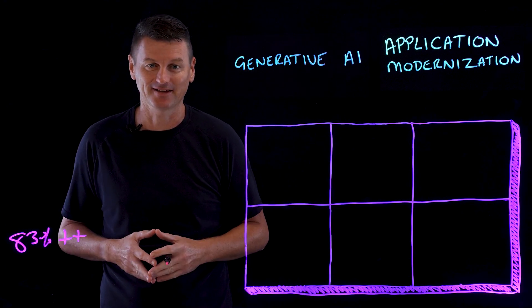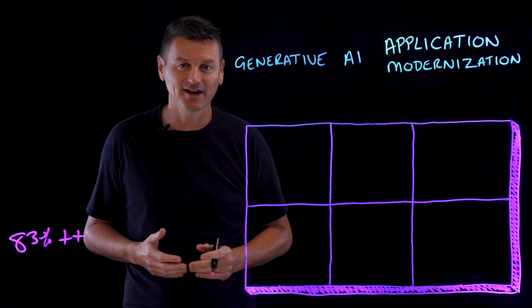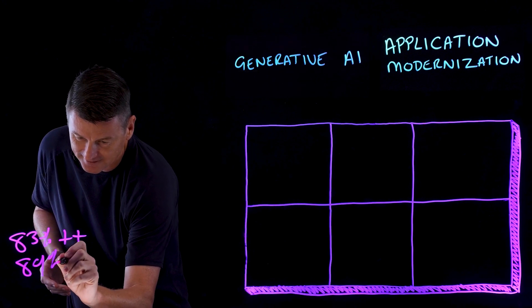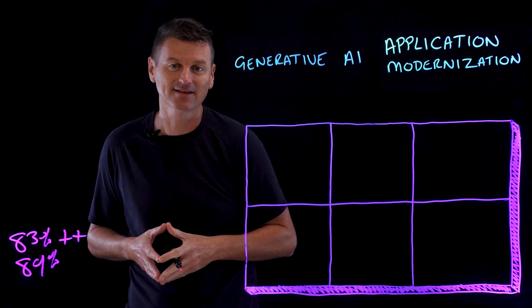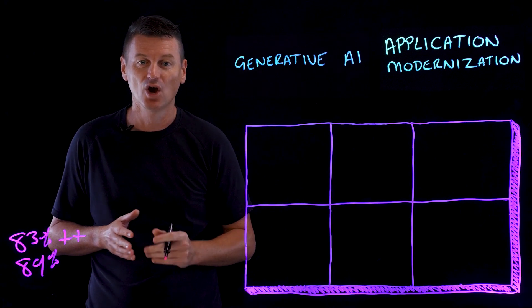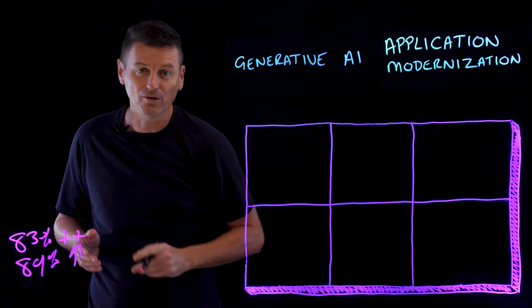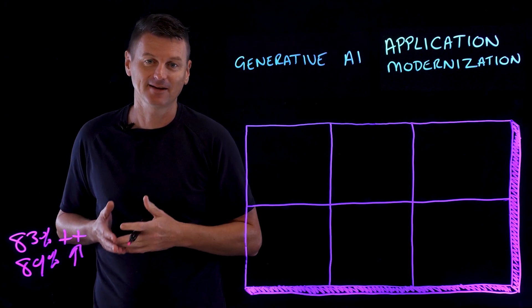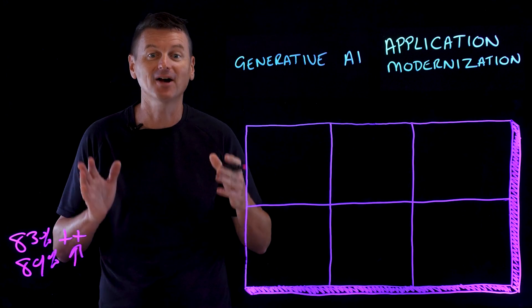that is gaining interest. And that same IBV study reported that 89% of C-suite execs agree that generative AI in app modernization projects will drive growth by improving existing products and services. But how?